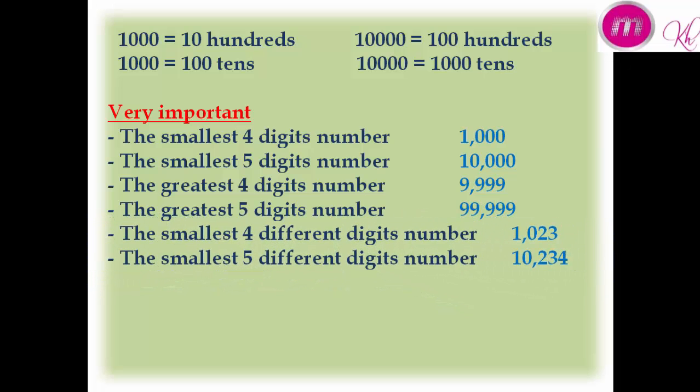The smallest four different digit number is 1023. The smallest five different digit number is 10,234.